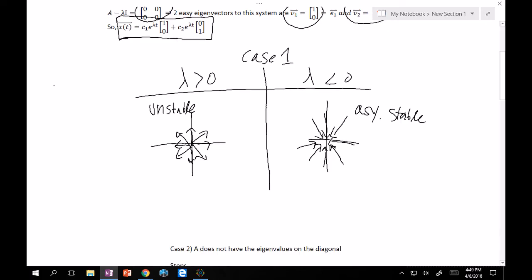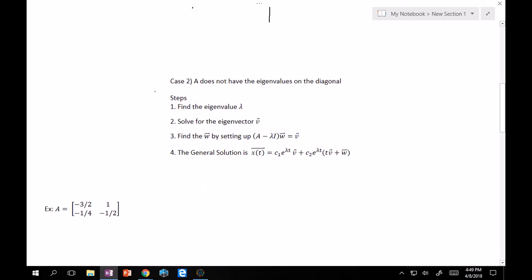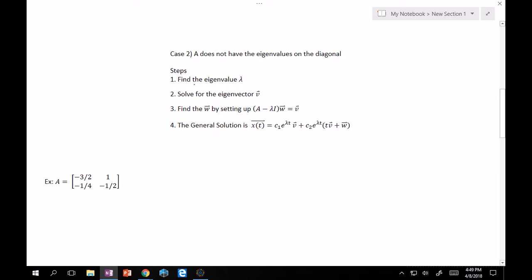Now, what's tricky is the other case, which is essentially the eigenvalues aren't on the diagonal. So what do you do? You find your singular eigenvalue lambda. You solve for your one eigenvector. So that answers your question. You only have one eigenvector, unfortunately. But you can find another linearly independent solution by trying to find W, which is another vector.